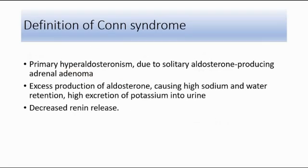The definition of Conn's syndrome: Conn's syndrome is primary hyperaldosteronism, which means there is a high level of aldosterone due to the presence of an aldosterone-producing adrenal adenoma. Adrenal adenoma is a benign tumor of the adrenal cortex. If the benign tumor is in the adrenal medulla, it is called pheochromocytoma.